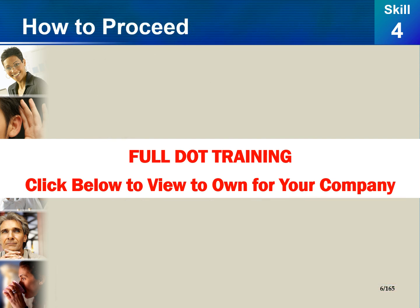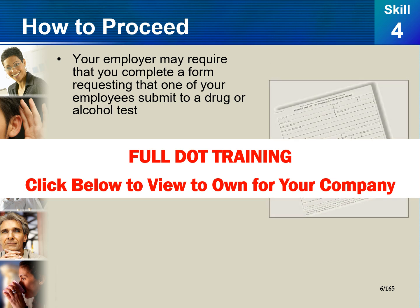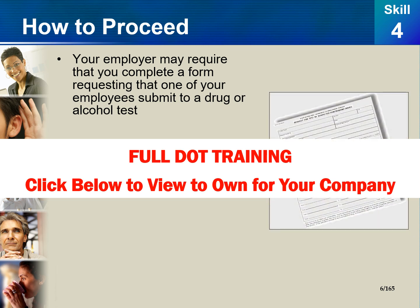Here's how to proceed. Your employer may require that you complete a form requesting that one of your employees submit to a drug or alcohol test. You will need to write your observations and include other information that triggered your reasonable suspicion. Remember, time is of the essence.